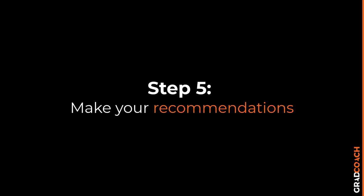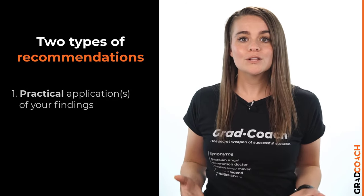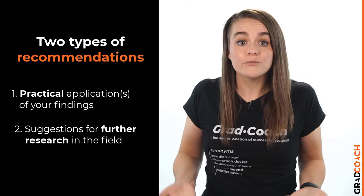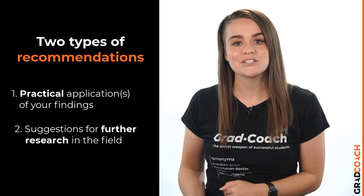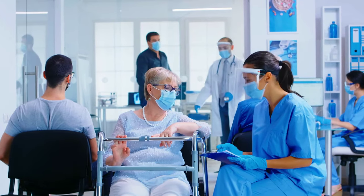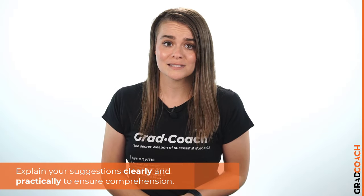Step five: make your recommendations. Now that you have unpacked your findings and acknowledged the limitations, you need to reflect on your study in terms of two factors: number one, the practical application of your findings, and number two, suggestions for future research. Again, some universities may prefer that you cover this content in the conclusion chapter rather than the discussion chapter, so double check what their preference is. The first thing to discuss is how your findings can be used in the real world — what contribution can they make to the field or industry? Make sure that you spell this out for your reader in practical terms, but also be realistic and ensure that any applications you propose are feasible.